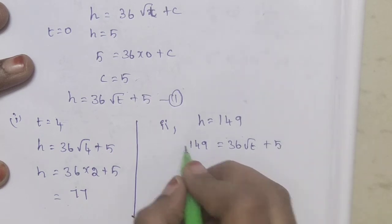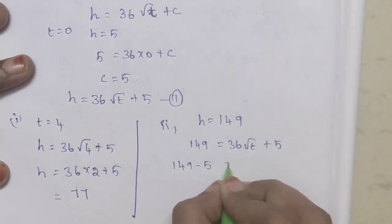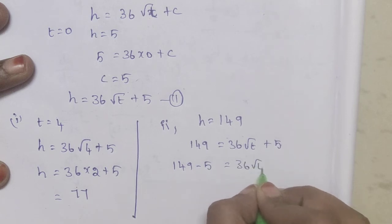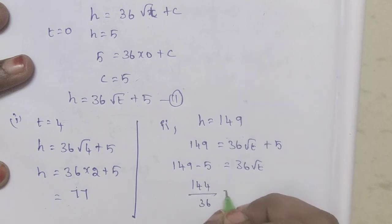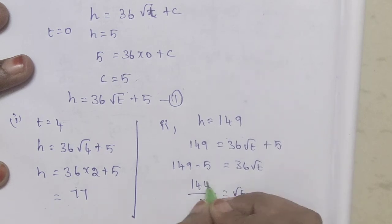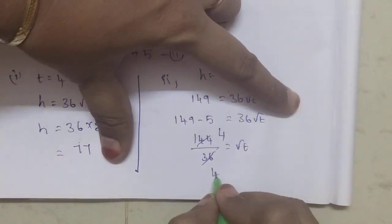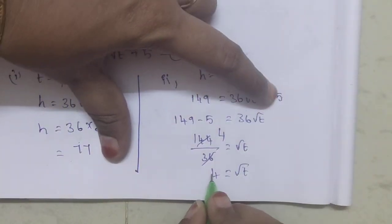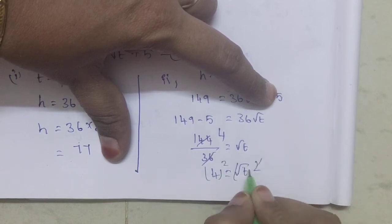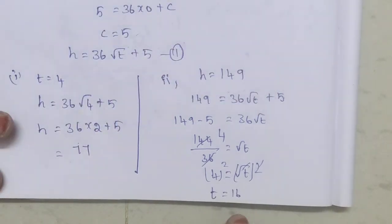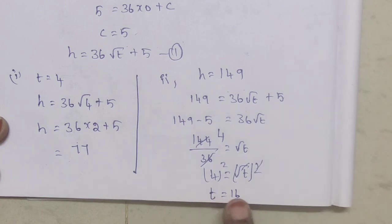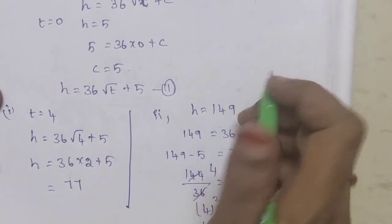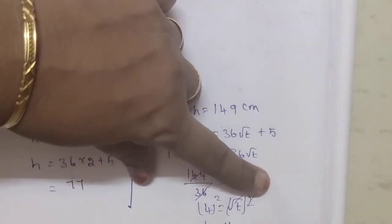From 149 equals 36√t plus 5, we get 144 equals 36√t, so √t equals 4, and therefore t equals 16. This is the height of the tree at that time.